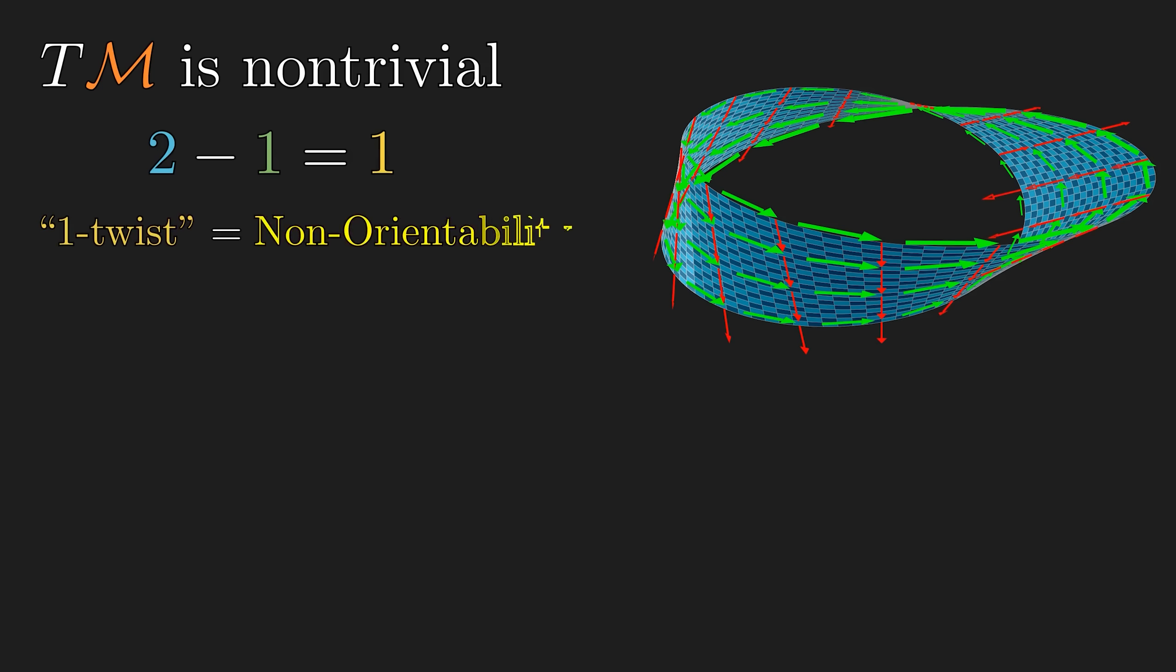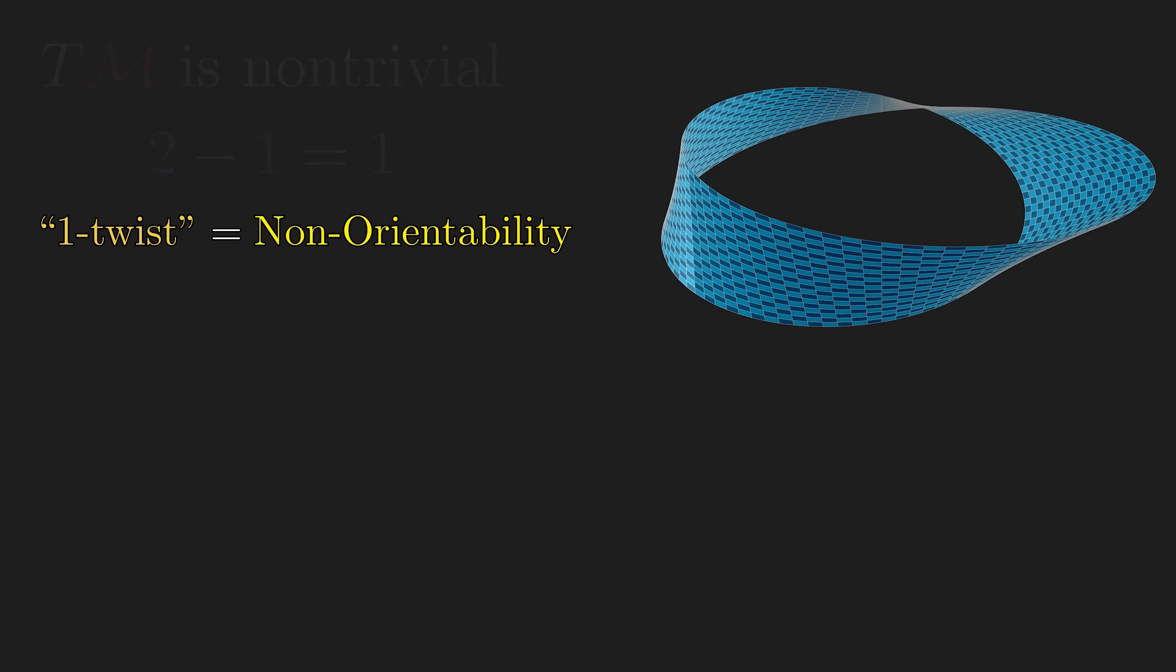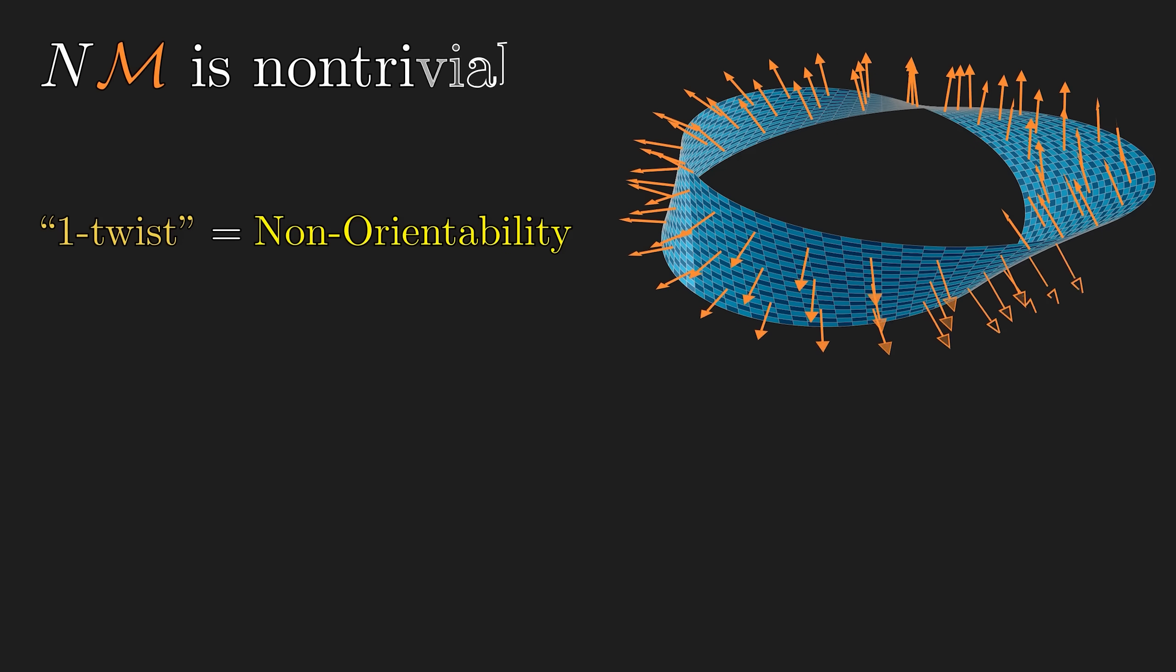In fact, the degree one twist that we've been talking about is actually the non-orientability of the manifold. For the same reason, the normal bundle has to be non-trivial as well.